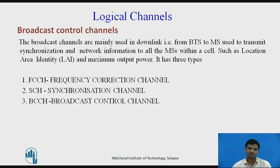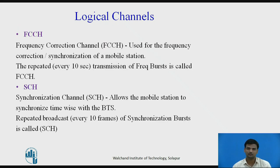Broadcast control channels have three types: frequency correction channel, synchronization channel, and broadcast control channel. The frequency correction channel (FCCH) is used for frequency correction and synchronization of the mobile station through repeated transmission of a frequency burst. It serves two purposes: to confirm this is the BCCH carrier, and to allow the MS to synchronize to the frequency. The synchronization channel (SCH) allows the mobile station to synchronize time-wise with the base station through repeated broadcast of a synchronization burst.